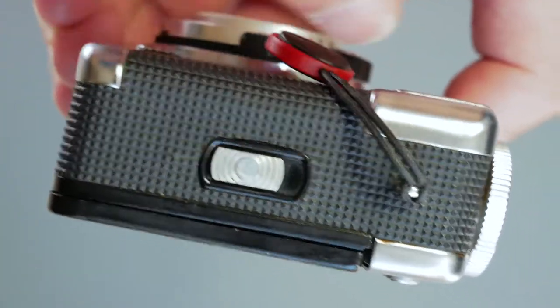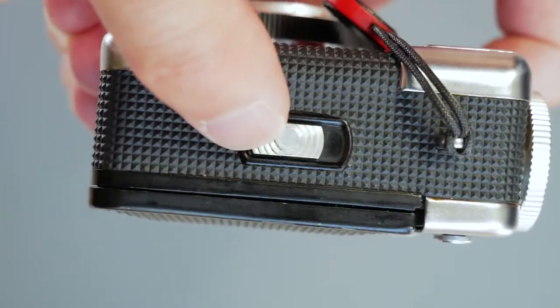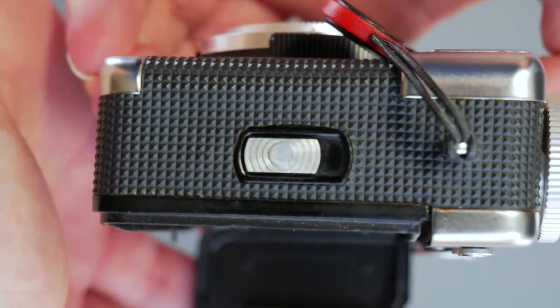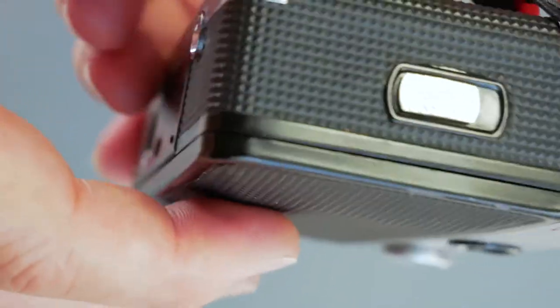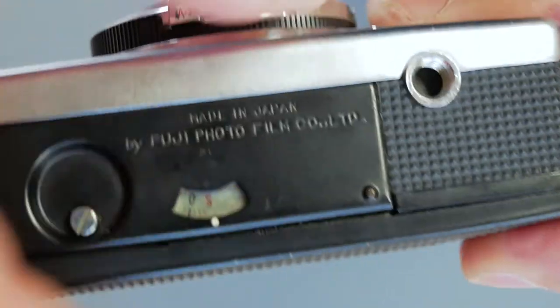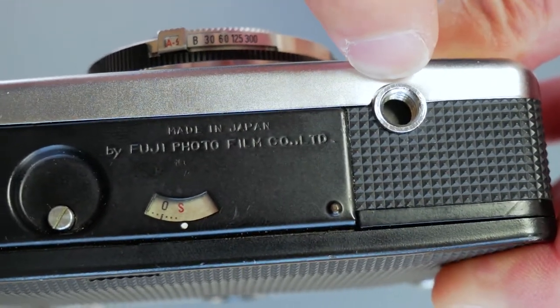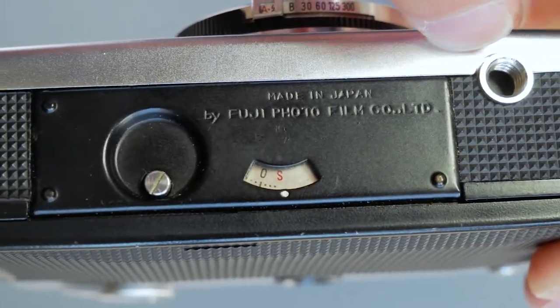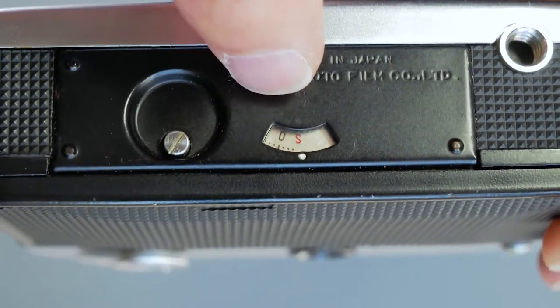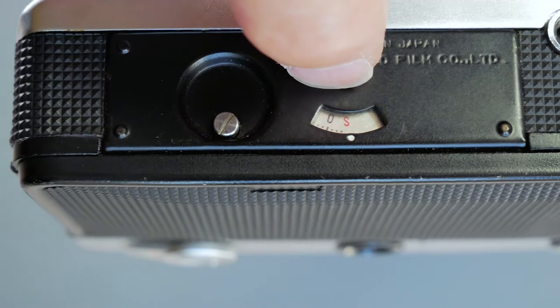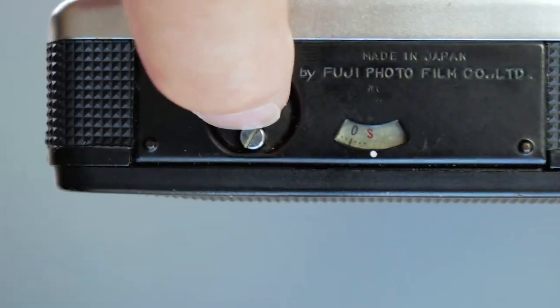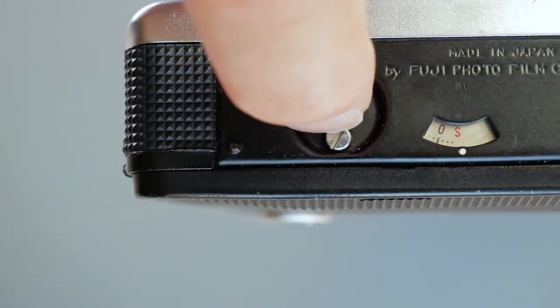On the side we've got the back release - slide that up like that. On the bottom we've got a tripod socket, we've got a frame counter, and we've got the film release for when you want to rewind it.